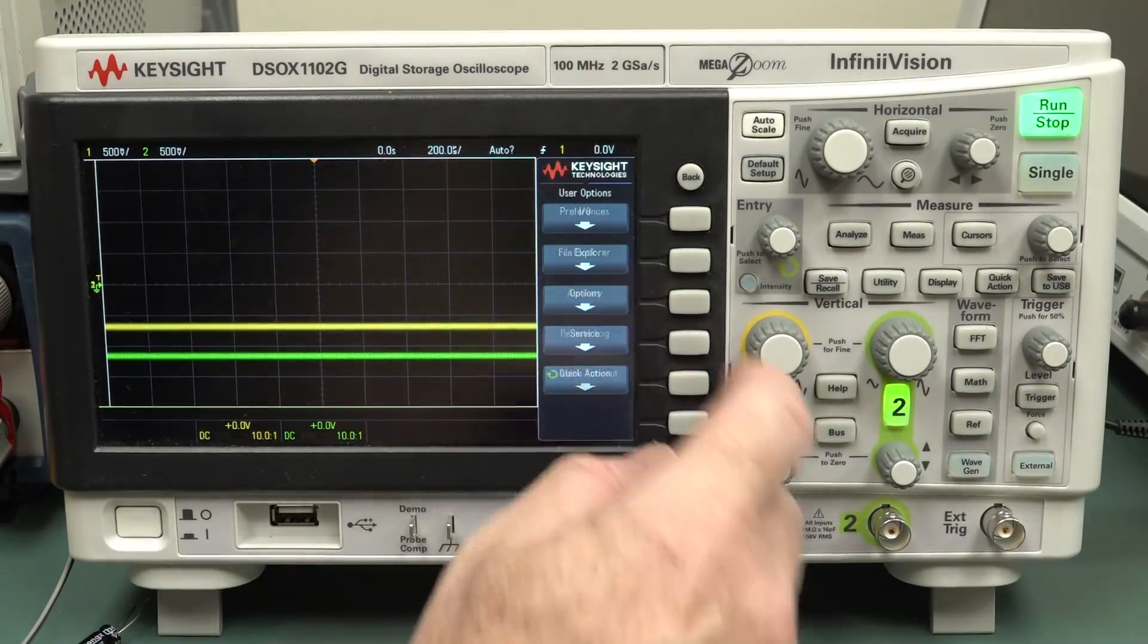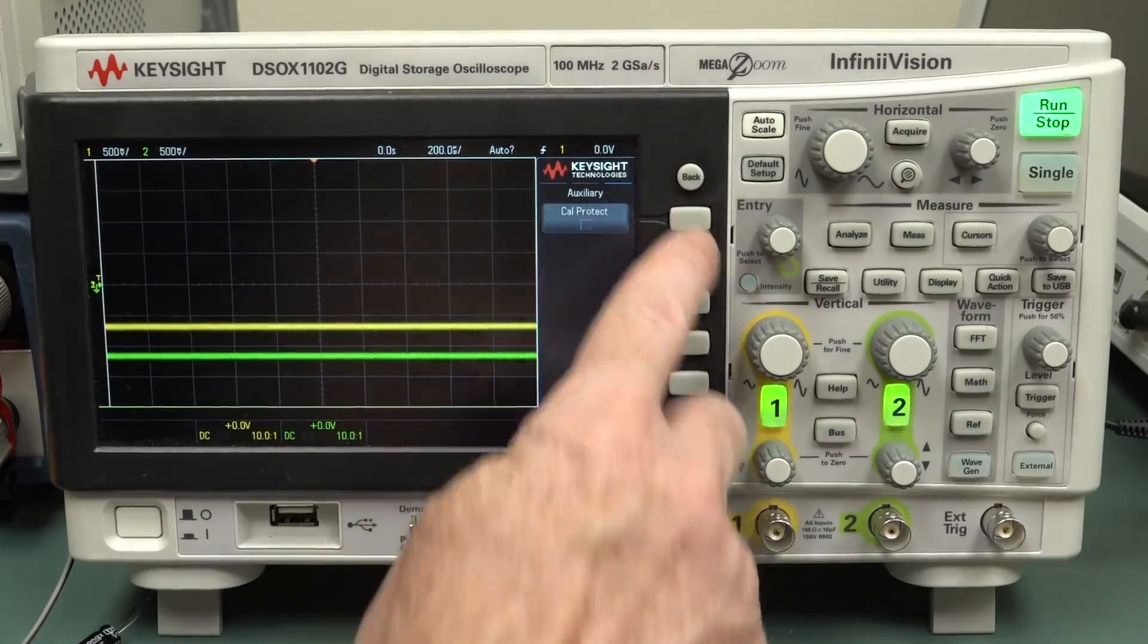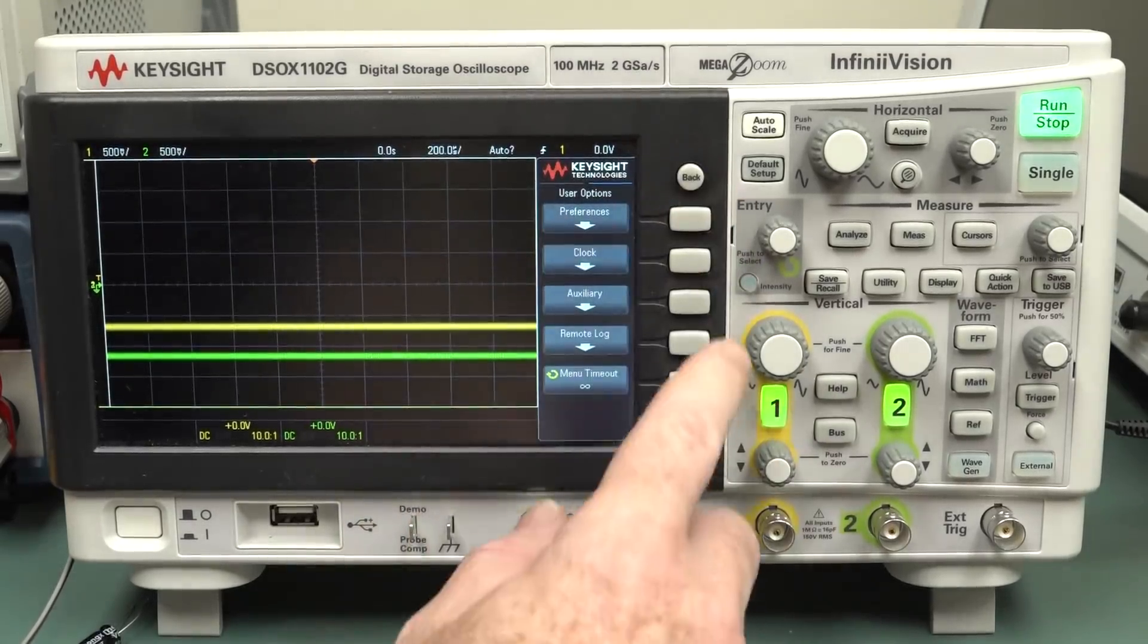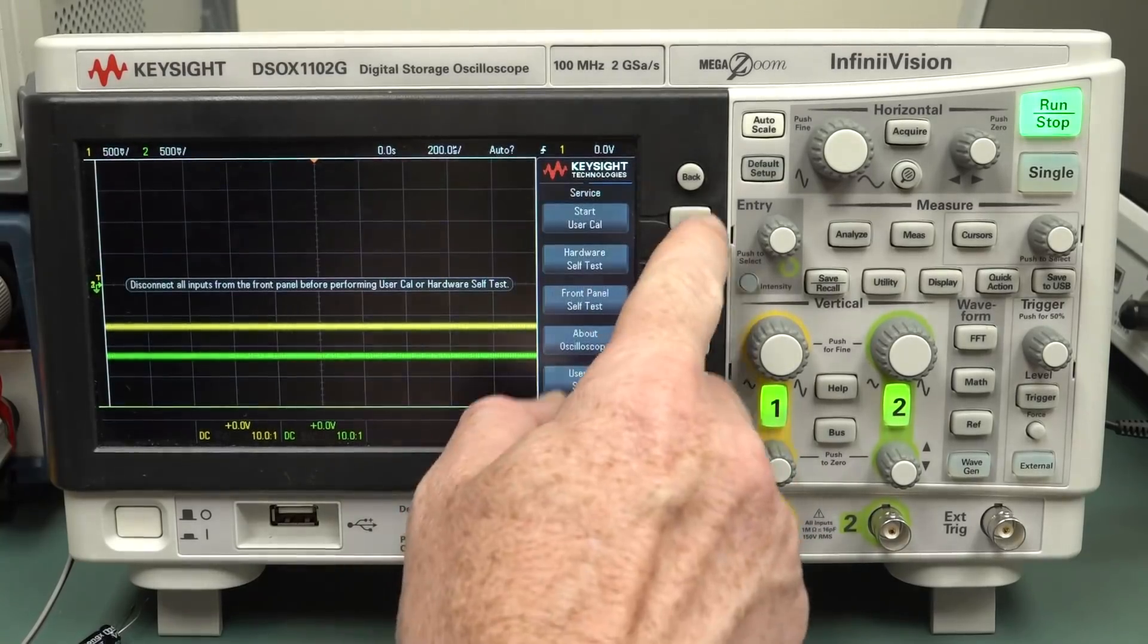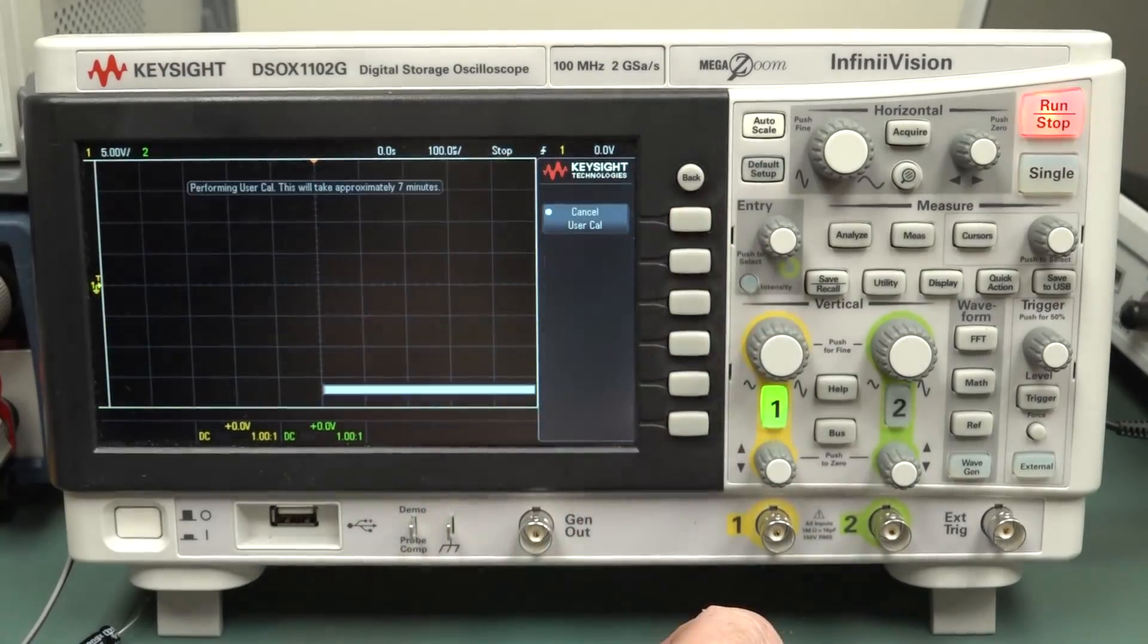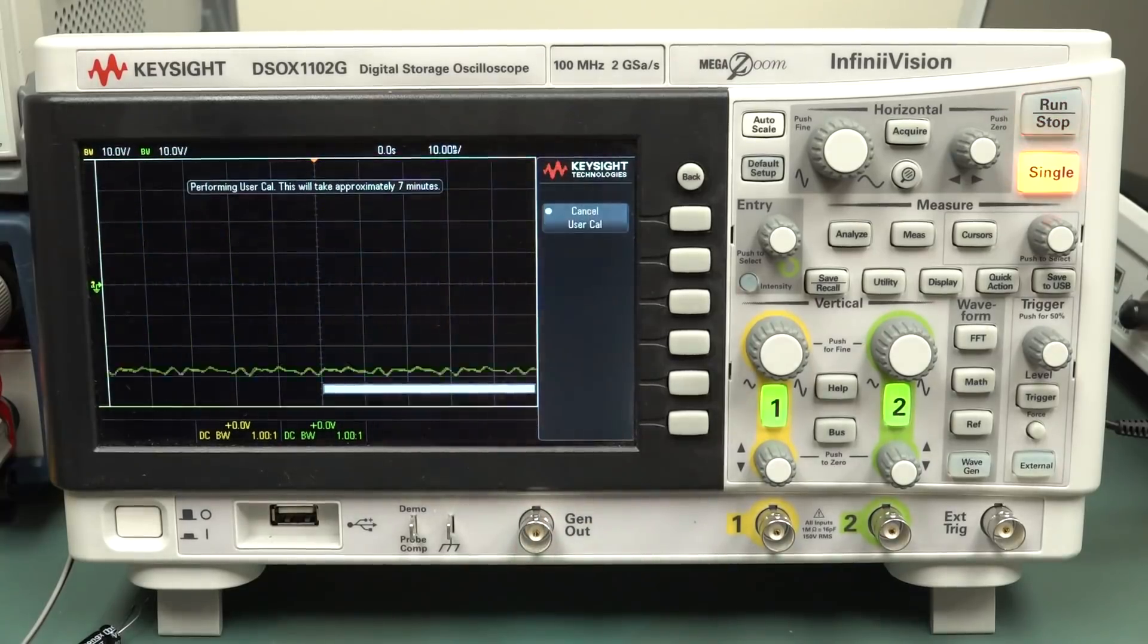Alright, so let's just run that calibration again. You've actually got to go into options here. Auxiliary. And Cal Protect. So you've got to disable the calibration protection. And then you've got to go into service here. And then start user calibration. And boom. There it goes. Take approximately seven minutes.